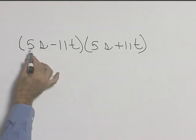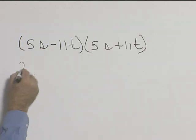So if we FOIL, we'll take the first terms and we'll have 5s times 5s, which will give us 25s squared.